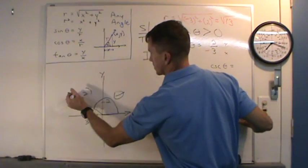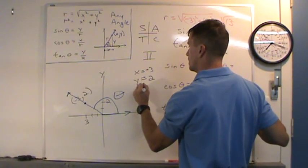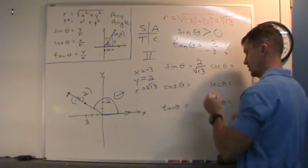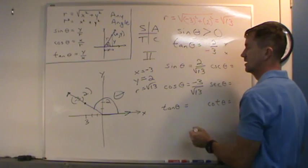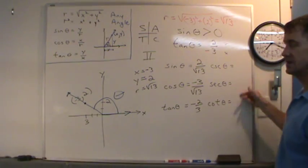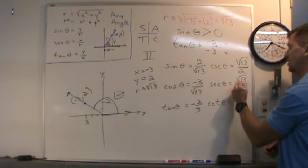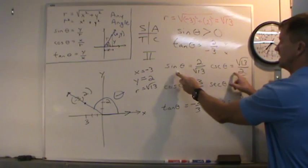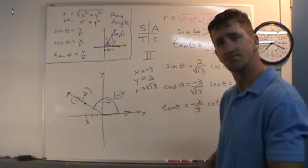Sine of theta is y over R: 2 over the square root of 13 — rationalized as 2 root 13 over 13. Cosine of theta: negative 3 over the square root of 13. Tangent of theta is y over x: negative 2 thirds. For the reciprocals: cosecant is square root of 13 over 2; secant is square root of 13 over negative 3; cotangent is negative 3 over 2. Notice these four were negative and these two — sine and cosecant — were positive. That's quadrant 2. ASTC: All Students Take College Algebra.